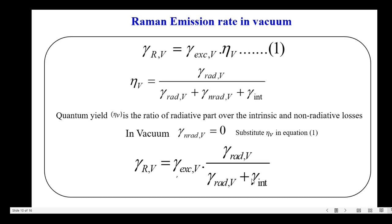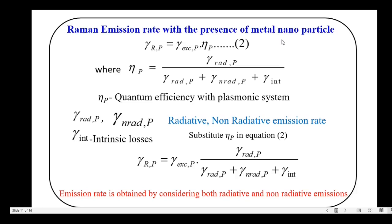The Raman emission rate with the presence of the nanometallic structure — for example a metal nanoparticle — is taken as gamma_r,P, which equals excitation rate with the plasmonic system times eta_P, where eta_P is the quantum efficiency with the plasmonic system. It is the ratio of the radiative part over the intrinsic and non-radiative losses. The first term is the radiative emission rate, the second term is the non-radiative emission rate, and gamma_int represents intrinsic losses. Substituting all the values gives the Raman emission rate with the presence of the metal nanoparticle equal to excitation rate with the plasmonic system times eta_P, where the emission rate is obtained by considering both radiative and non-radiative emissions.